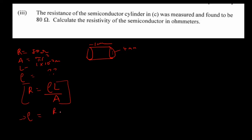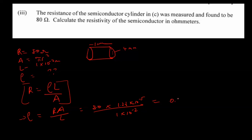So we rearrange to ρ = R × A / L, and substitute: R = 80 ohms, A = 1.26×10⁻⁵ m², and L = 1×10⁻² m.